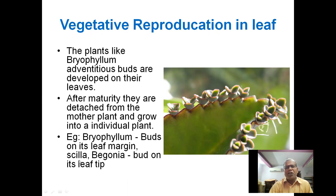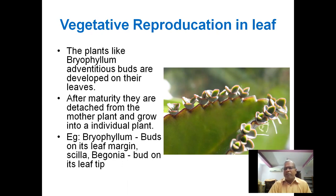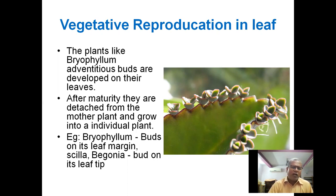The leaf's primary function is photosynthesis. It also helps in gas exchange. Transpiration is also a main role — these are normal functions. Vegetative reproduction through leaves is a special function, as seen in Bryophyllum.